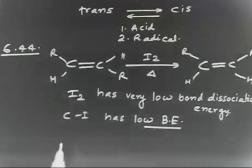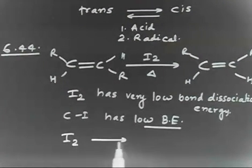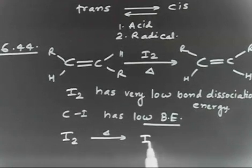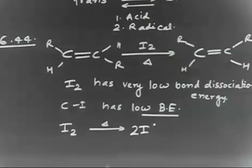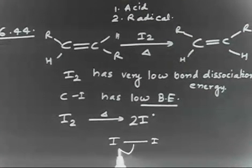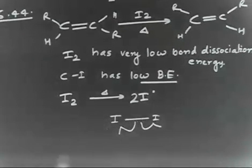In the first step you have iodine, and on heating you are breaking the iodine-iodine bond. So you will have 2I•. You can draw the curved arrow: iodine-iodine bond, one electron going this side, one electron going that side, giving 2I•.